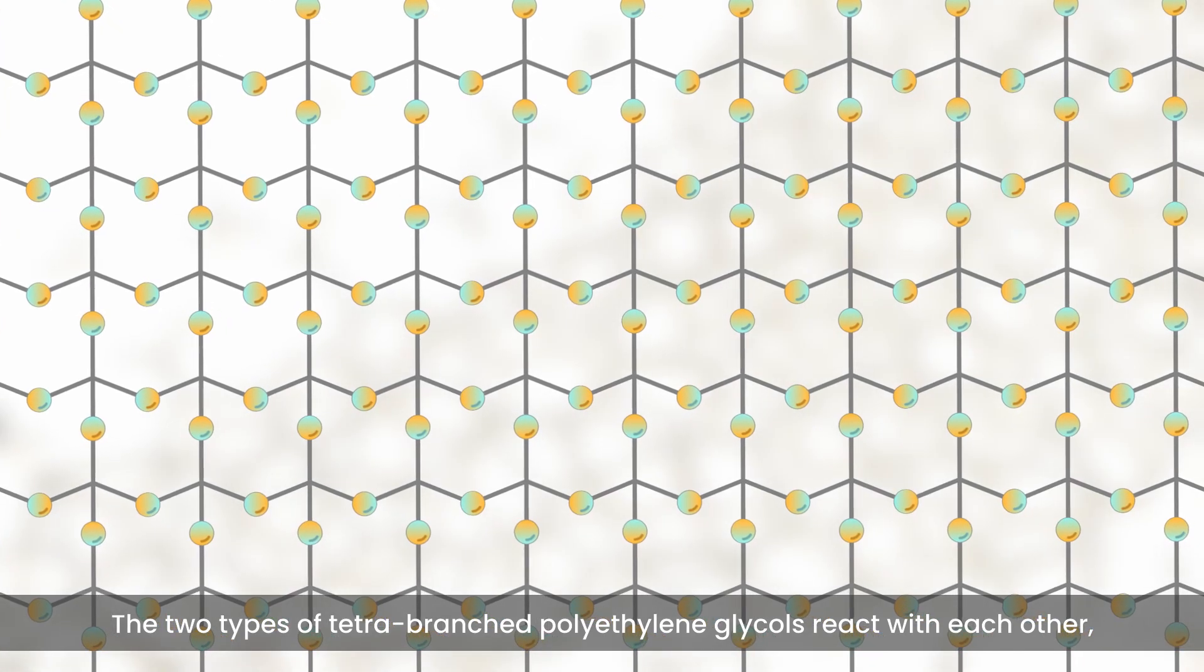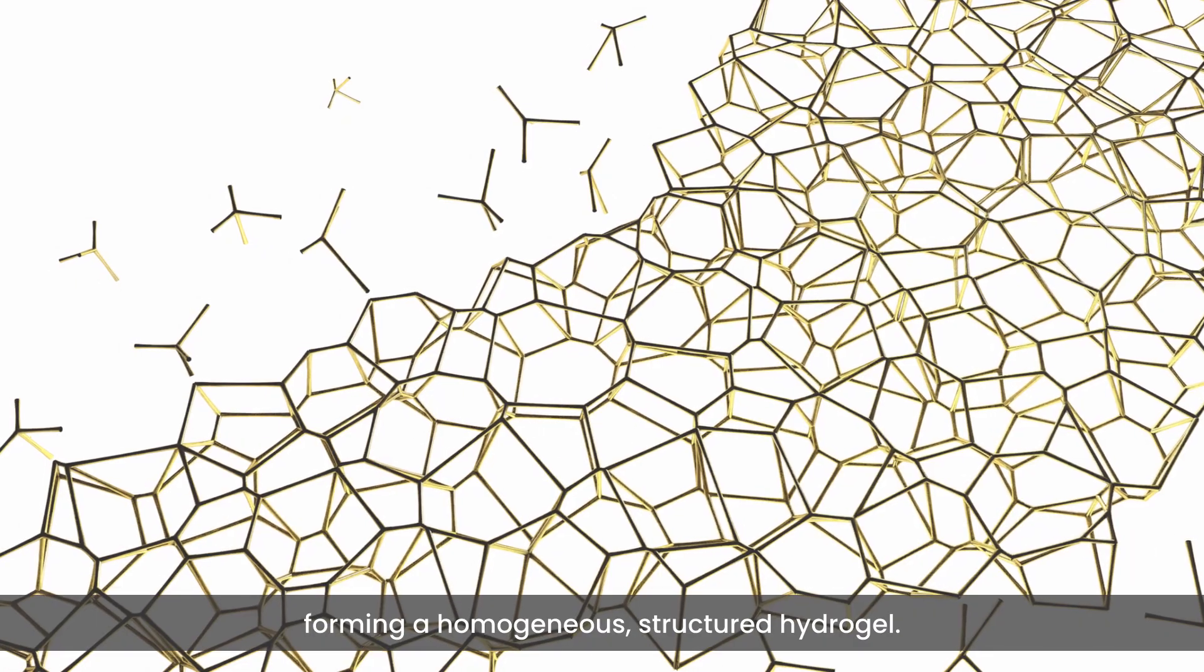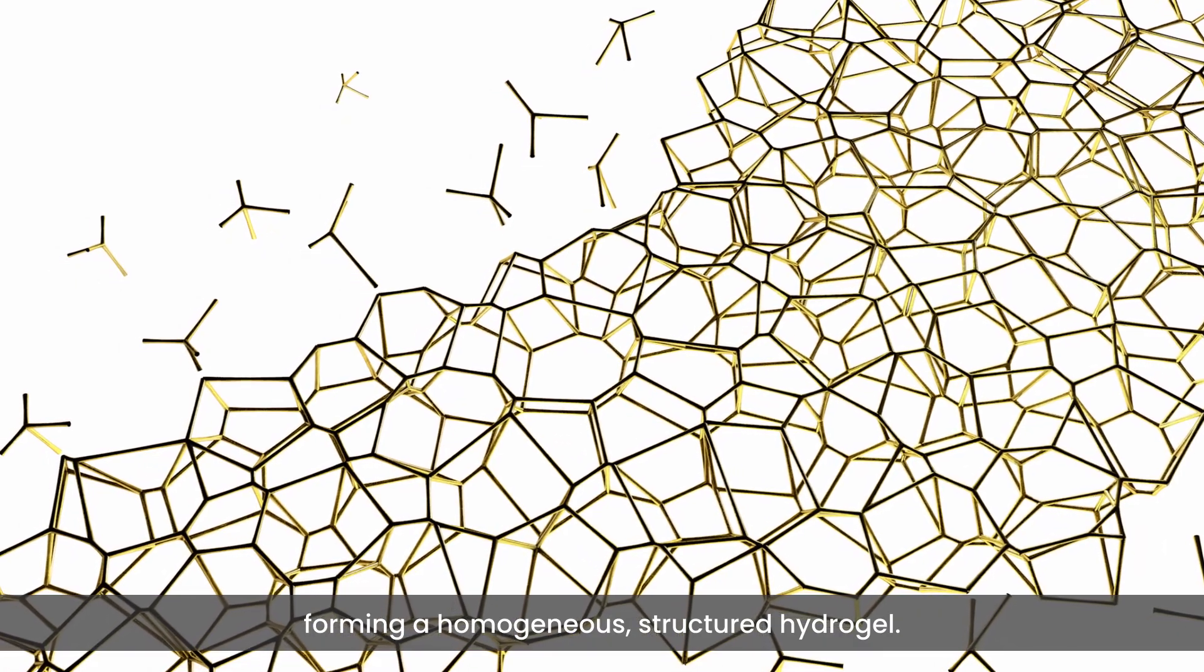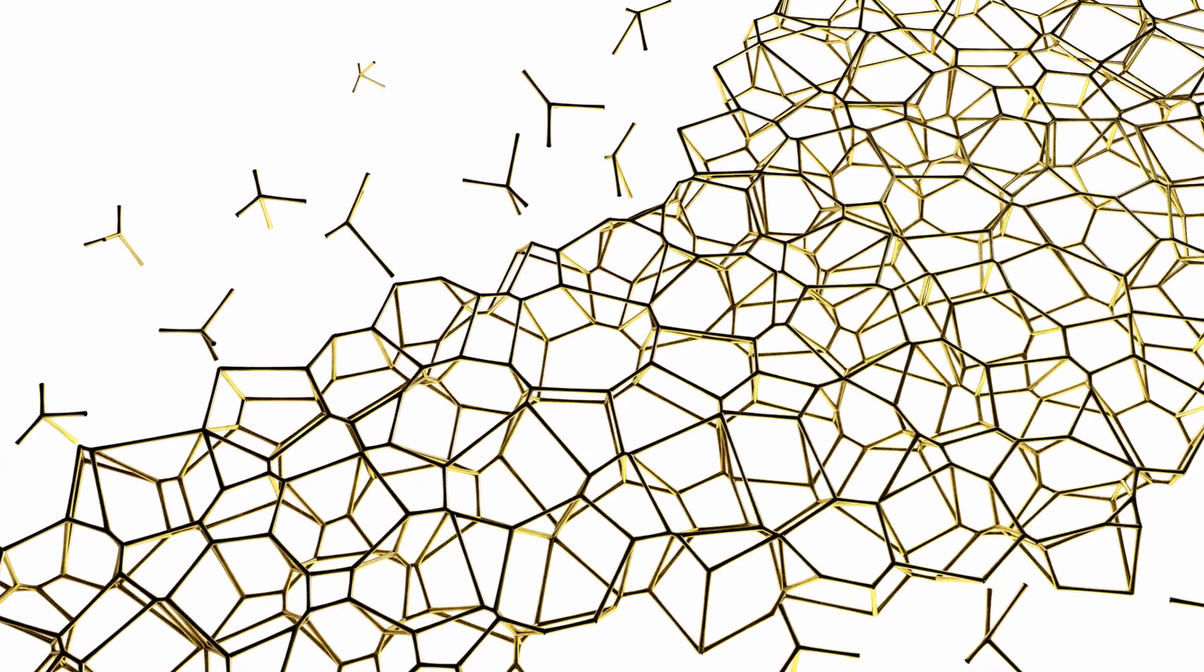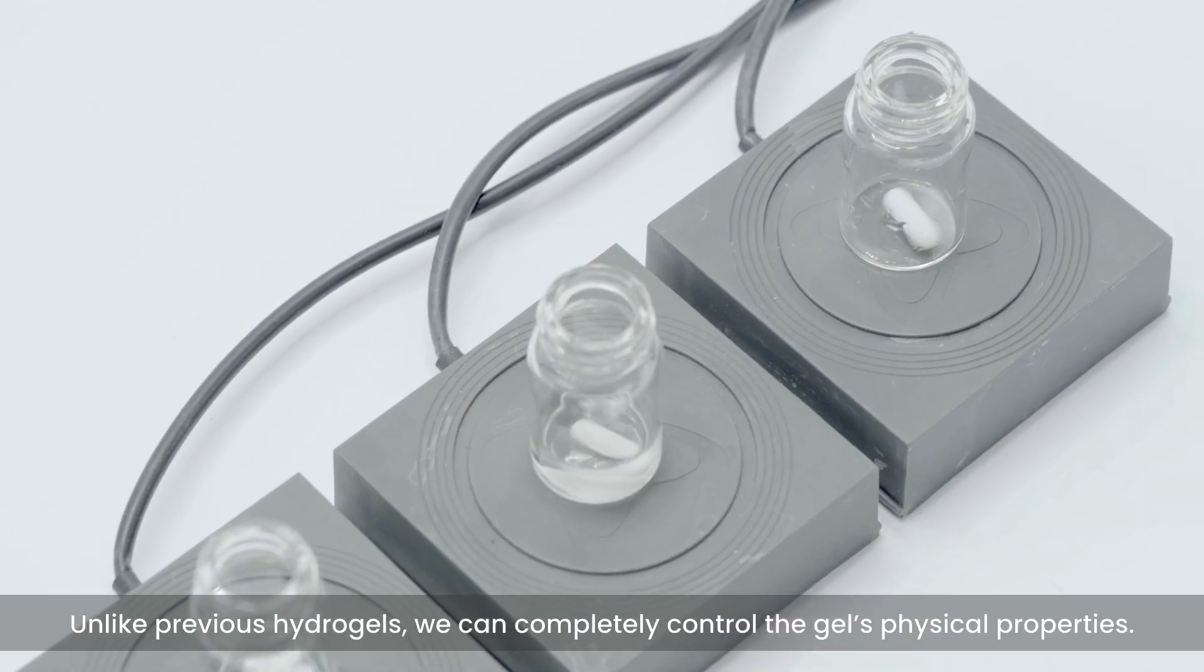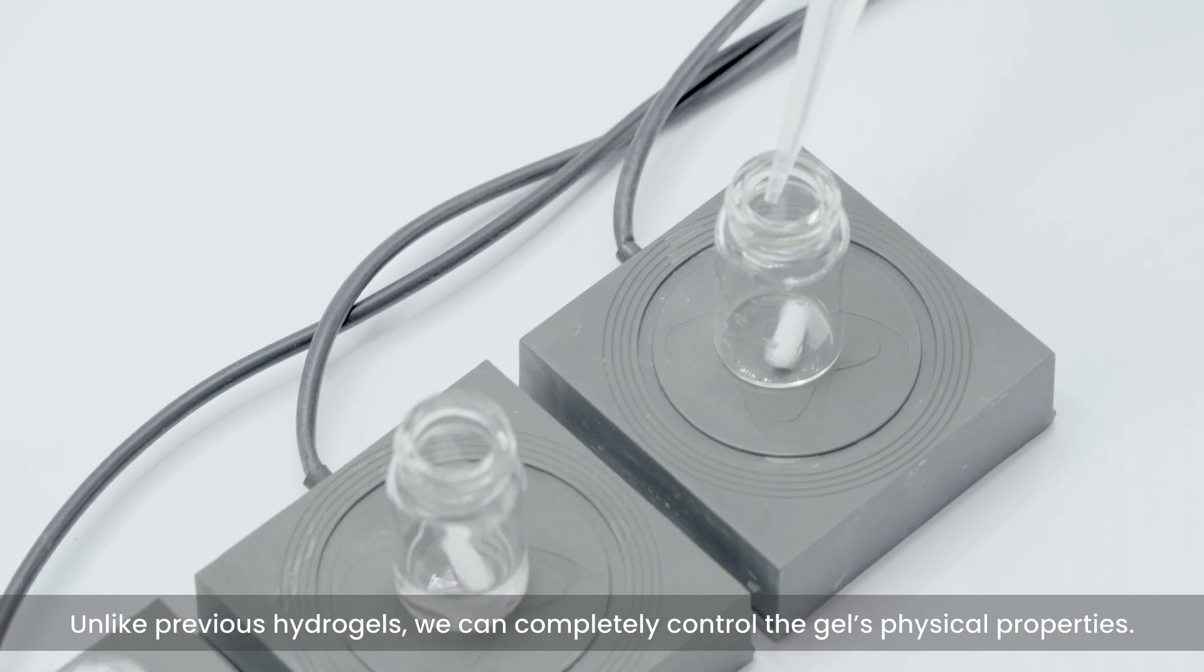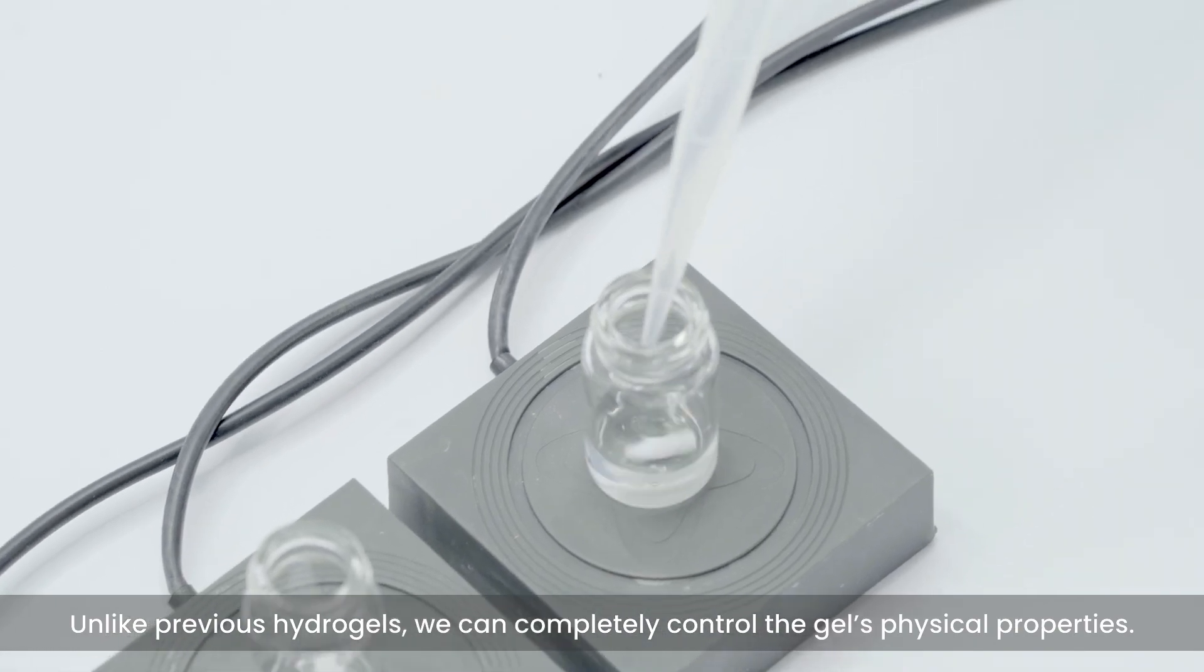The two types of tetra-branched polyethylene glycols react with each other, forming a homogeneous structured hydrogel. Unlike previous hydrogels, we can completely control the gel's physical properties.